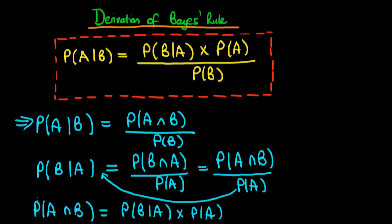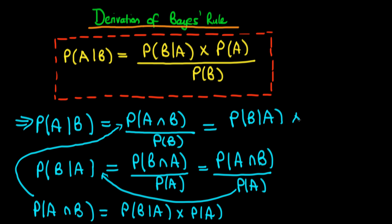This is now an expression we can plug into the numerator of our original expression, which then gives us the probability of B given A occurring times the probability of A, all divided through by the probability of B occurring — and lo and behold, we have arrived at Bayes' rule.